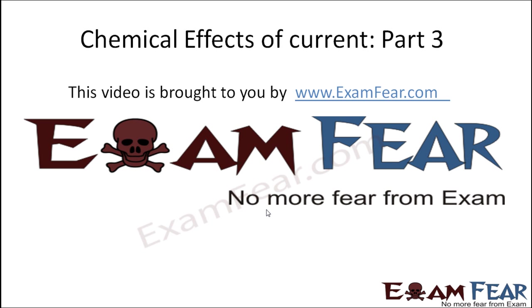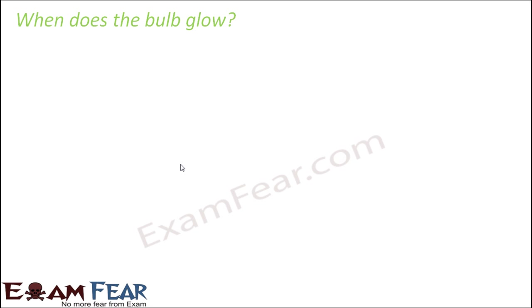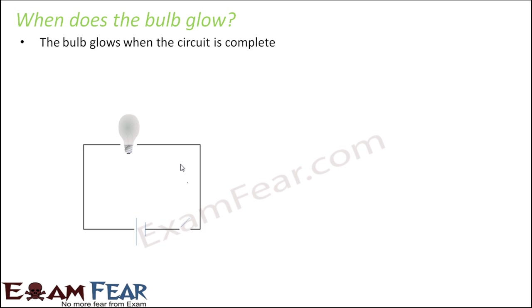This video on chemical effects of current part 3 is brought to you by examfew.com. Now the question is: when exactly does the bulb glow? We have already seen that initially when you do not switch it on, the bulb doesn't glow. It glows only when you switch it on, or when you complete the circuit. This is known as a complete circuit, where there is no break in between.